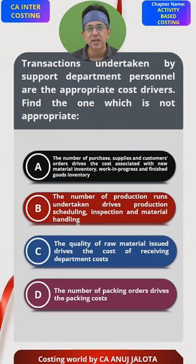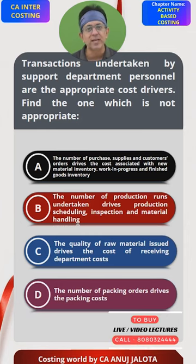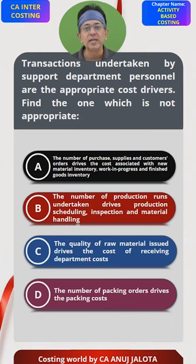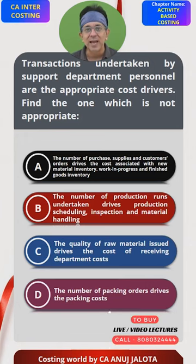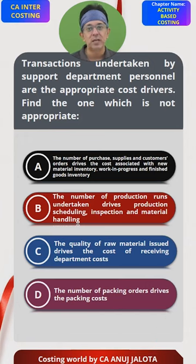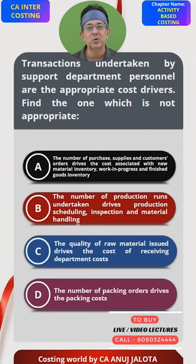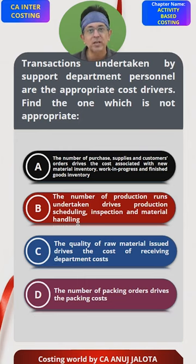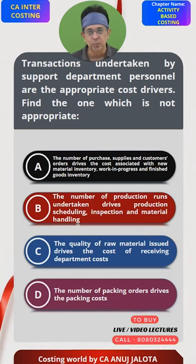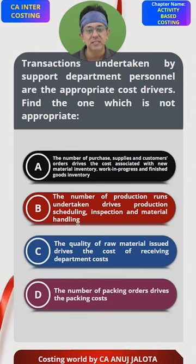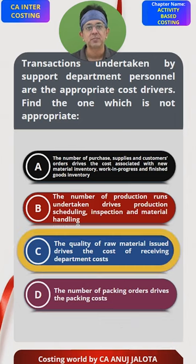C is not correct because it says the quality of raw material issued drives the cost of the receiving department. It should not be quality — it should be the quantity. How will quality drive the receiving department cost? The receiving department receives raw material when the supplier sends it, offloads the goods, and keeps them in the warehouse. It is how many times you receive the raw material that determines the cost driver — not quality. So C is inappropriate and is the correct answer.